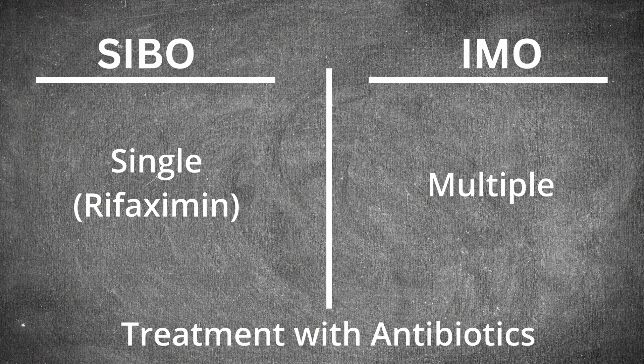Now let's move into treatment. What about treatment with antibiotics? For SIBO, you can treat with a single antibiotic — things like Rifaximin, Metronidazole, or Neomycin — and a single antibiotic can be beneficial. However, when you look at IMO, it's a different story. Intestinal methanogen overgrowth requires multiple antibiotics. Just giving Rifaximin alone is not going to make the mark — it's going to have limited effects. So you generally need to combine multiple antibiotics together, for example Rifaximin and Neomycin, or Rifaximin and Metronidazole.